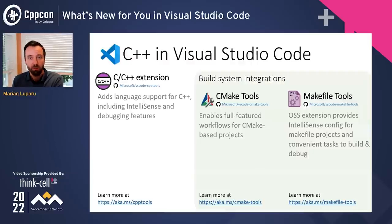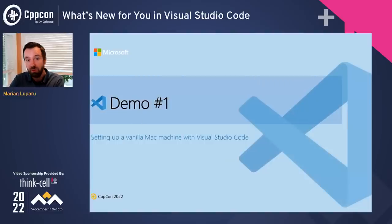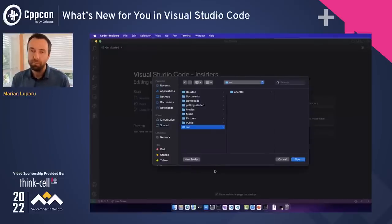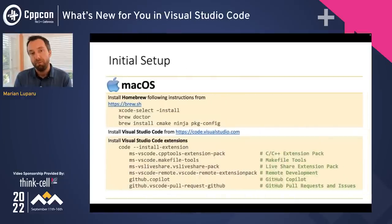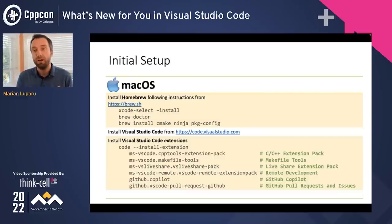The CMake Tools and Makefile Tools extensions are open source and are great examples of how to integrate a build system into VS Code. Now let's switch directly into a demo. For this first demo, we'll configure, compile, and debug a C++ codebase from scratch on a vanilla Mac machine — a MacBook with out-of-the-box apps, plus Homebrew to acquire CMake, Ninja, and pkg-config, which installed Xcode compilers and libs needed to compile C++.